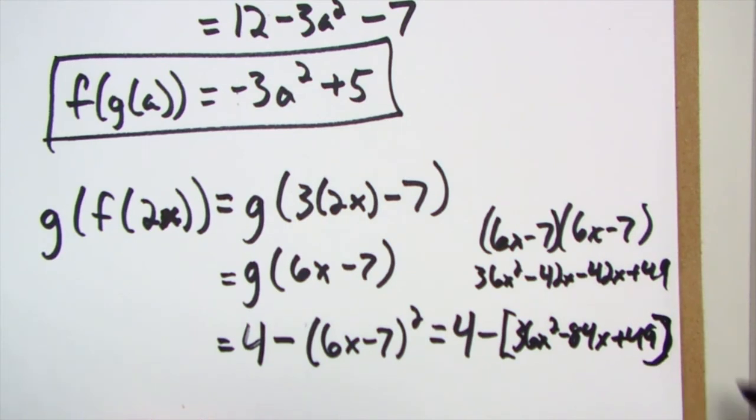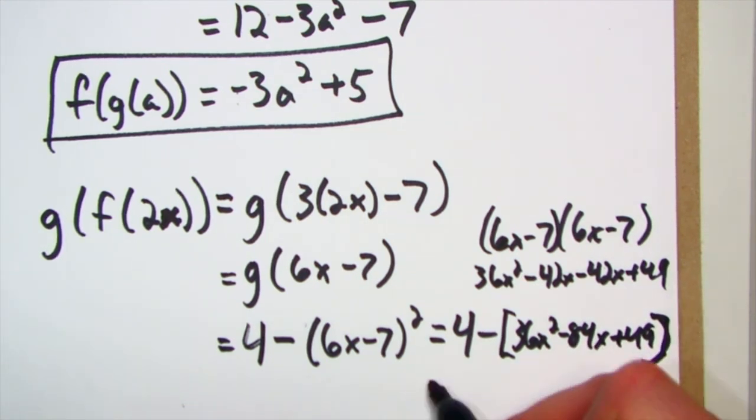And then I get 36x squared minus 84x plus 49. All right, that's pretty long. Now that comes after the minus, so now I have to negate all those things. So it's going to be 4 minus 36x squared plus 84x minus 49.